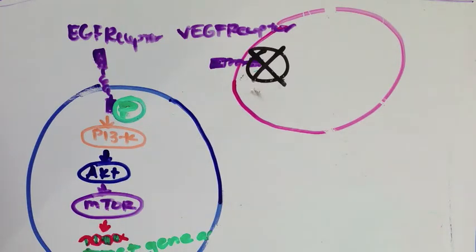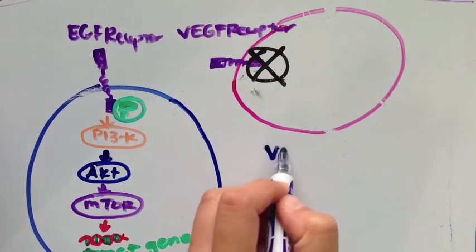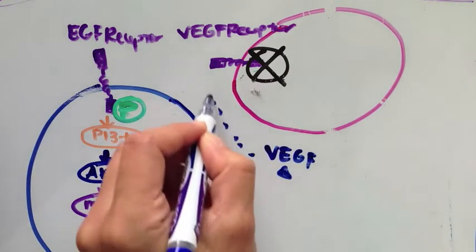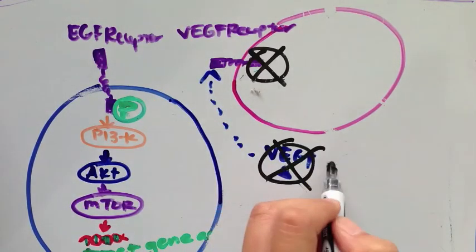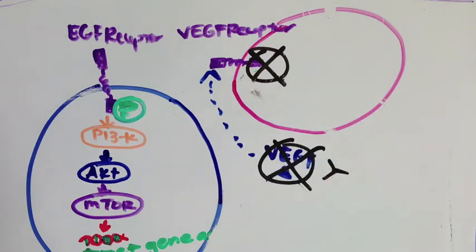The signaling proteins themselves are also targets for new monoclonal drugs. Vascular endothelial growth factor inhibition can be used to treat metastatic colorectal cancer, metastatic kidney cancer, and advanced non-small cell lung cancer with the monoclonal antibody Bevacizumab.